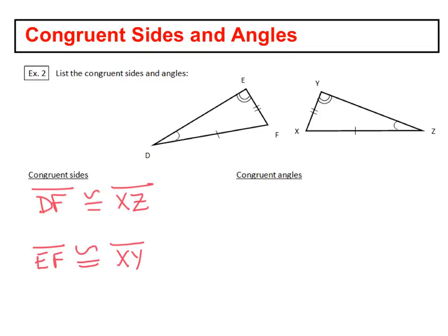So we have this angle D over here with just the one little curve. That's going to match up with angle Z over there. So you could say angle D is congruent to angle Z. But there's a better way to write that because that's not as specific.